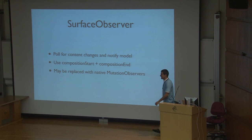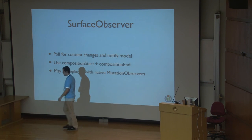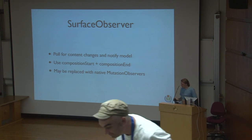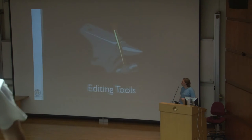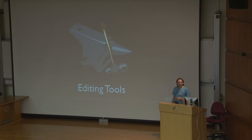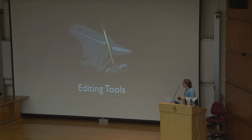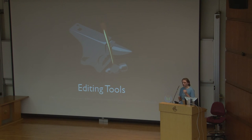The next chapter is editing tools. We've previously discussed the data model and content editable. Editing tools actually work the other way around. So instead of touching the document with the cursor and typing, editing tools push changes directly to the data model, which is then synchronized to the content editable surface.